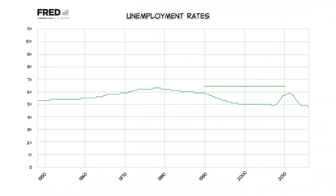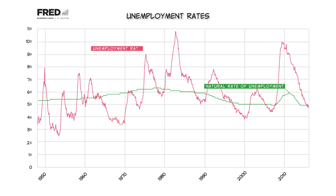Unfortunately, we can only estimate the natural rate of unemployment — it's not something we directly observe. This figure shows one estimate of the natural rate alongside the actual unemployment rate. Notice that by 2015, the actual unemployment rate was close to the natural rate, suggesting that by this estimate, the time for fiscal and monetary policy had passed. Other estimates of the natural rate might suggest more room for policy.